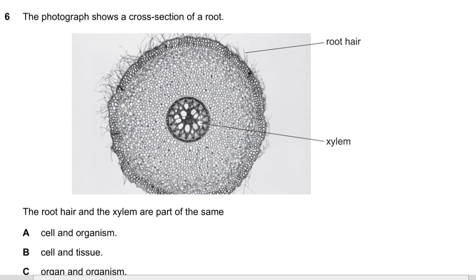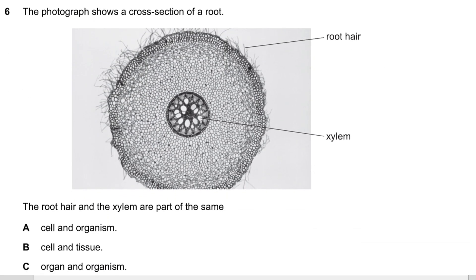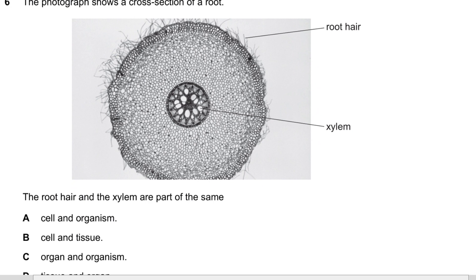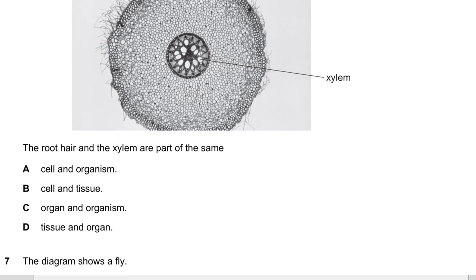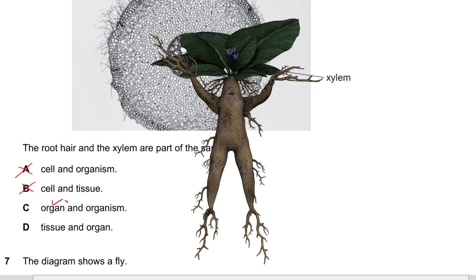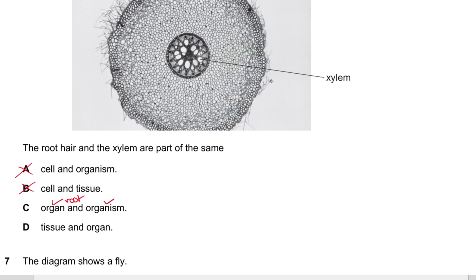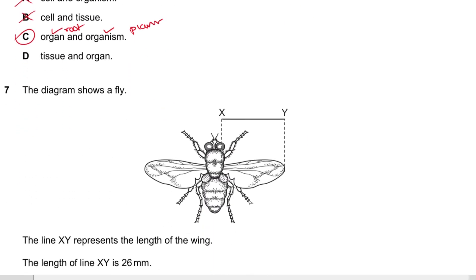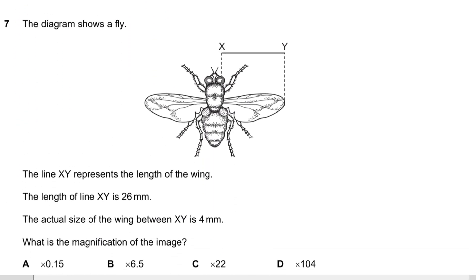Question 6: The photograph shows a cross section of a root. The root hair and the xylem are not part of the same cell; they are part of the same organ, which is the root, and the same organism, which is the plant. The answer is C.